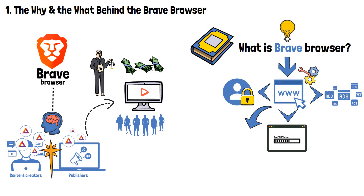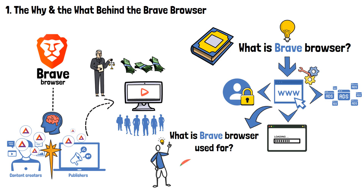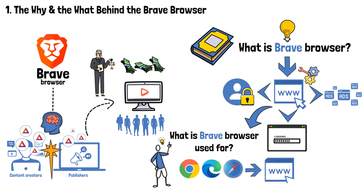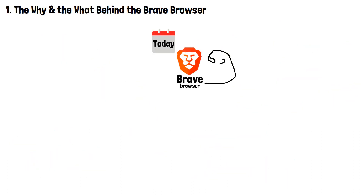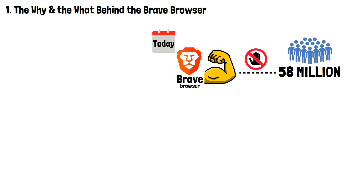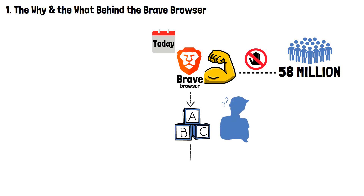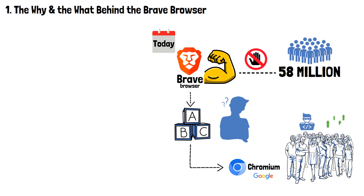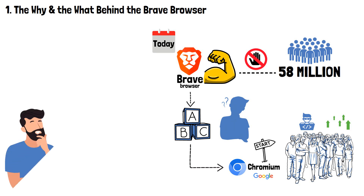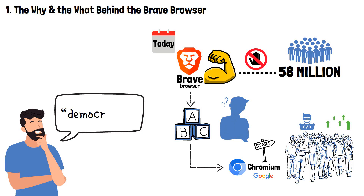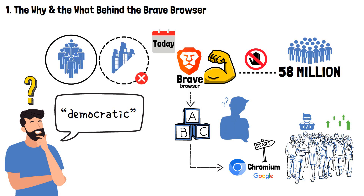What is the Brave Browser used for? The answer is simple: it's used for the very same thing as Google Chrome, Microsoft Edge, Safari, and any other internet browser — to browse the internet. As of today, Brave is still going strong with almost 58 million monthly active users. It's built on open-source Chromium code by Google, meaning anyone can continue developing and improving it. It's truly something you could almost call democratic — a project centered around the people, not the profits of advertisers and data collectors.